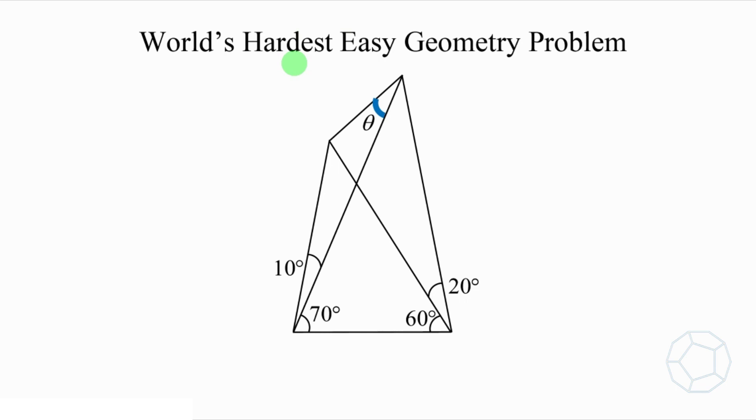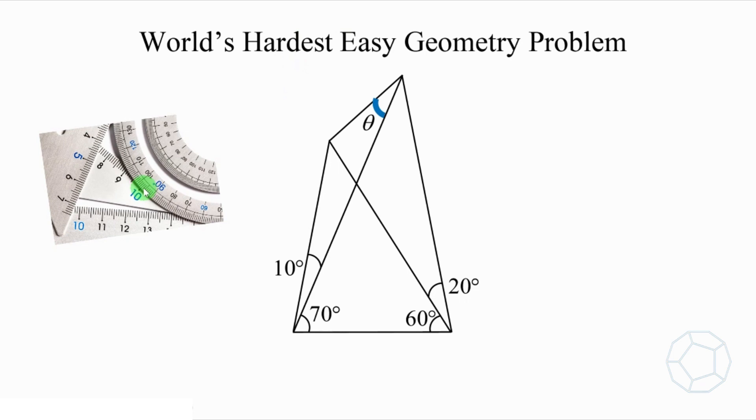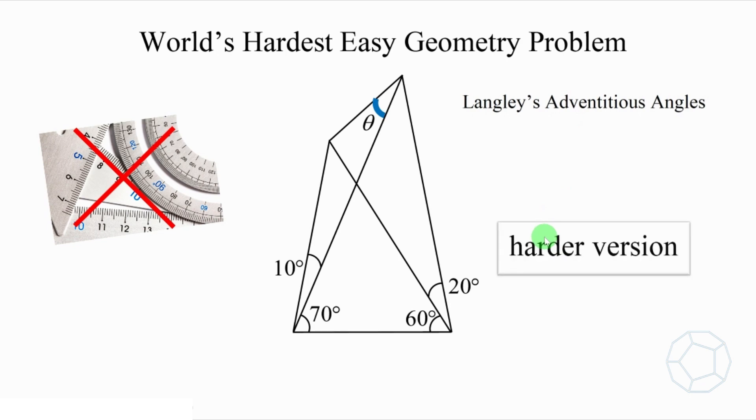The name is weird as the problem is very easy to understand. At the same time, it's very hard to solve if you try to use the elementary method, and you're not allowed to use rulers nor protractors. It's originally called Lennie's advantageous angles. But I'm not going to talk about the original question, because it can be made even harder if the given conditions are changed a little bit. Without further ado, let's get started.